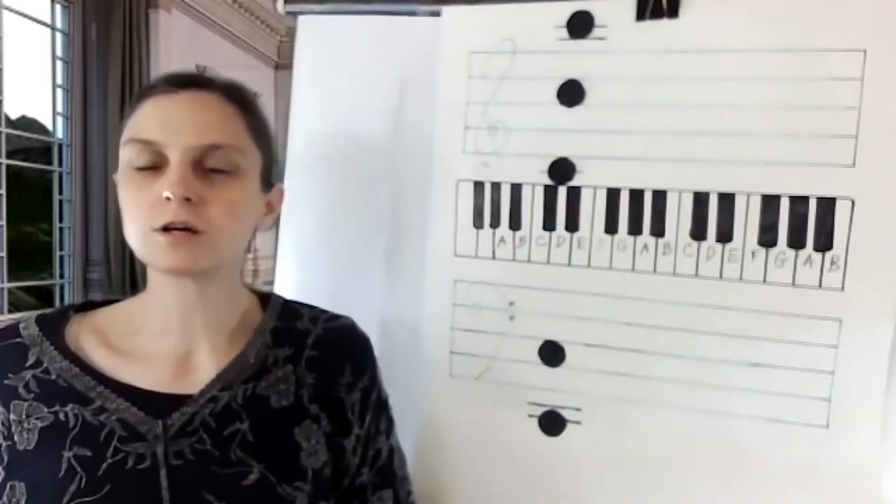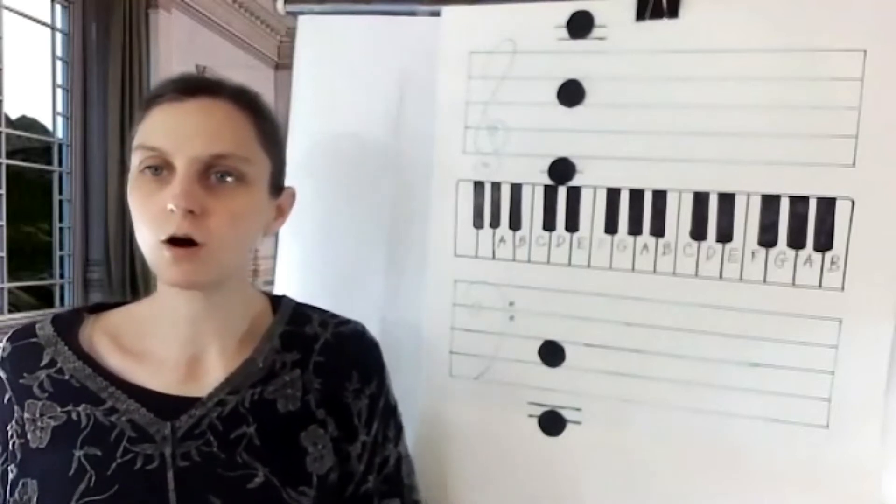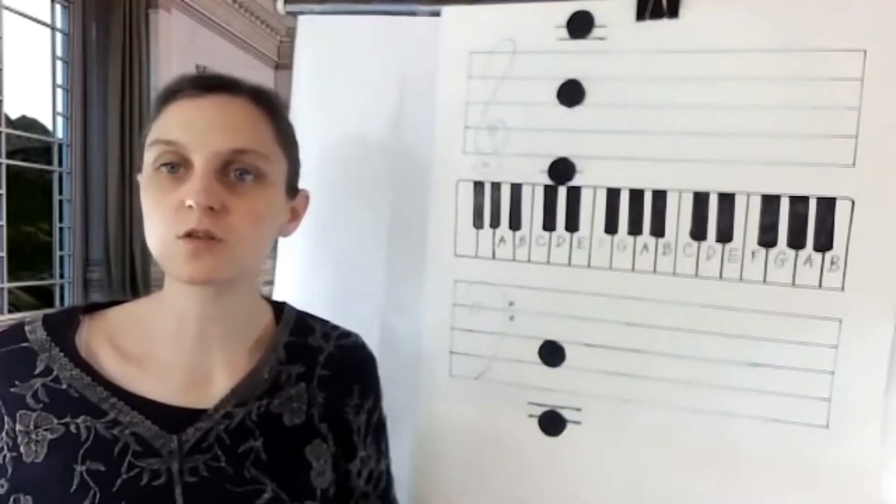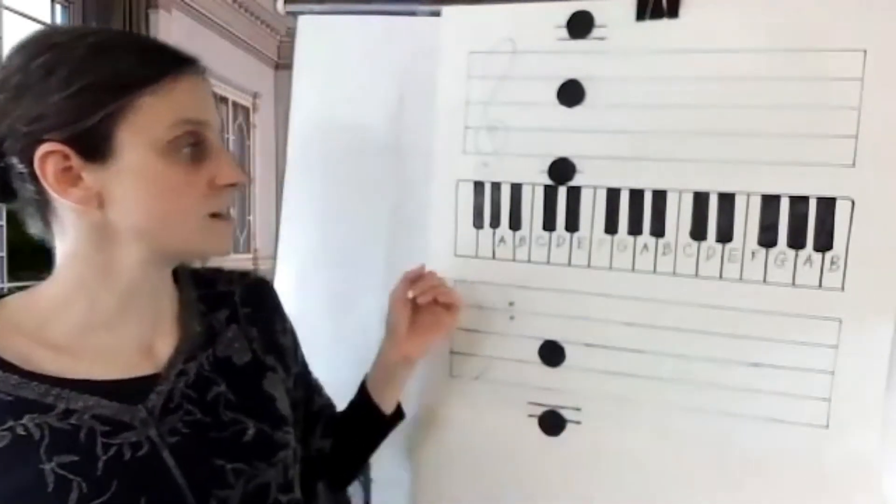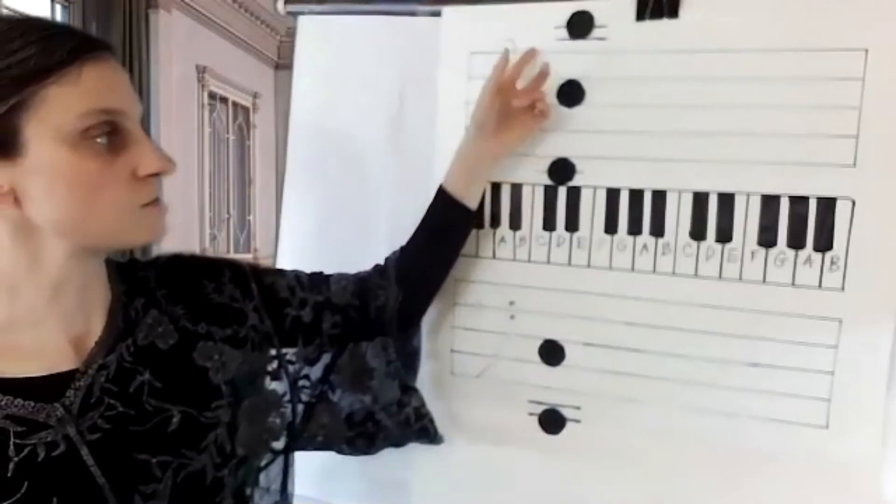So the goal is to memorize your lines and spaces so that you will be able to play them by sight. If you memorize the E, G, B, D, F, every good boy does fine. F, A, C, E, face.